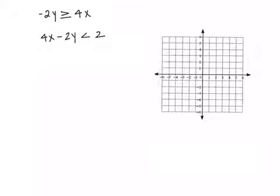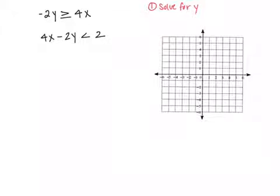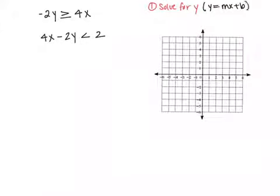So to graph them, what we need to do first is to solve for y. Why do we do this? It's because we want it in slope-intercept form — in other words, y equals mx plus b. When you have it in this format, you can see what your slope is and what your intercept is, so you can plot it on the graph.